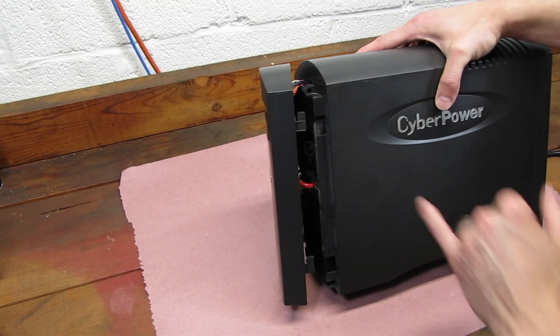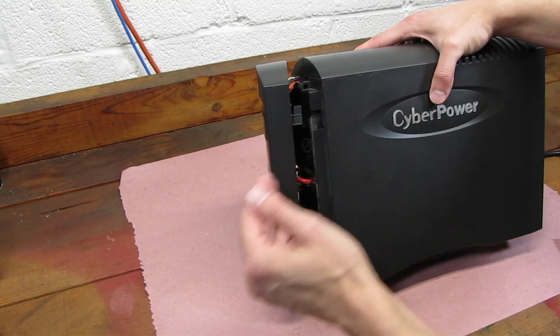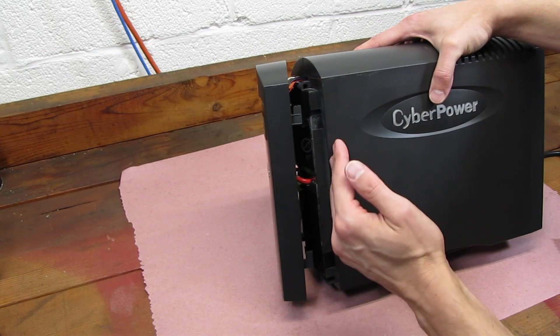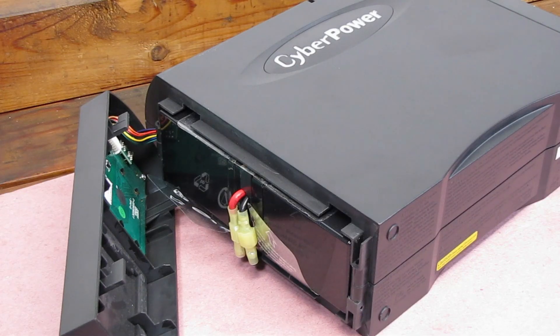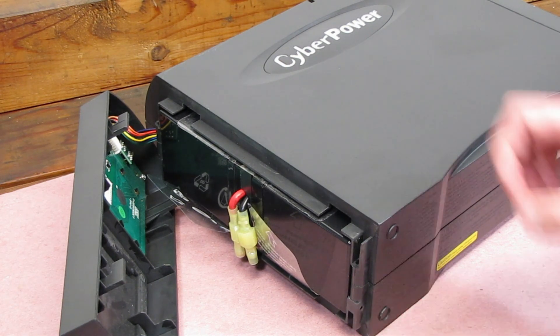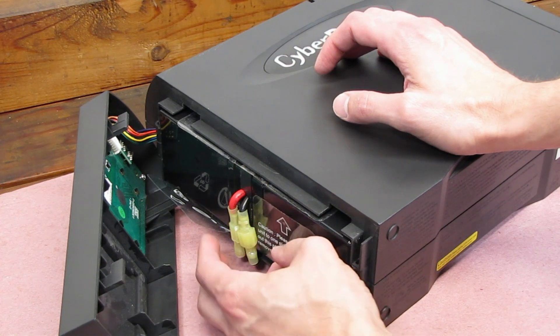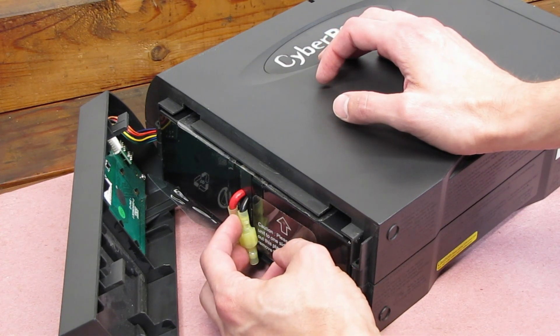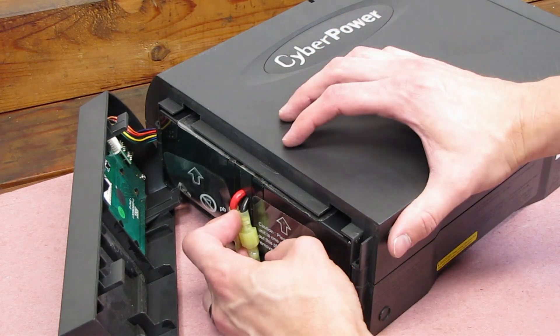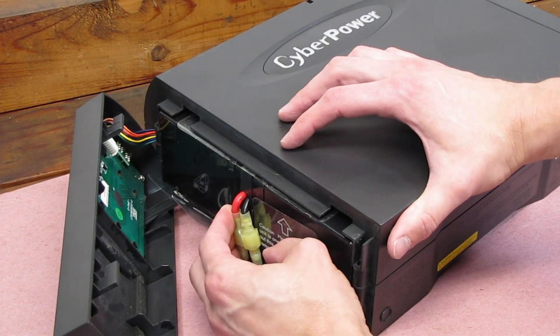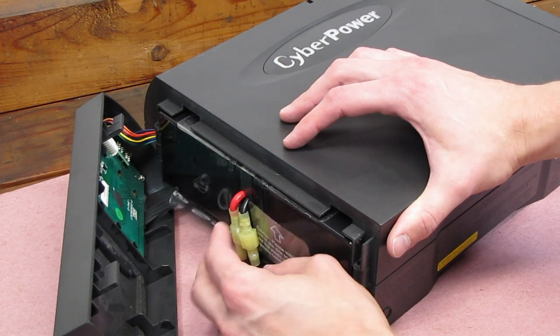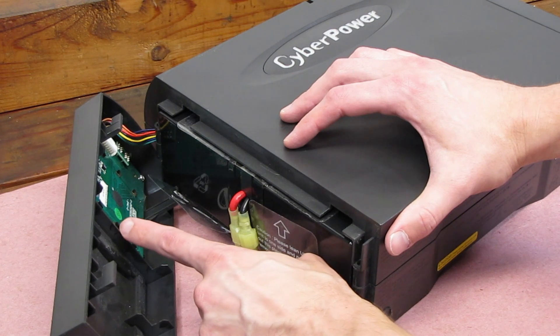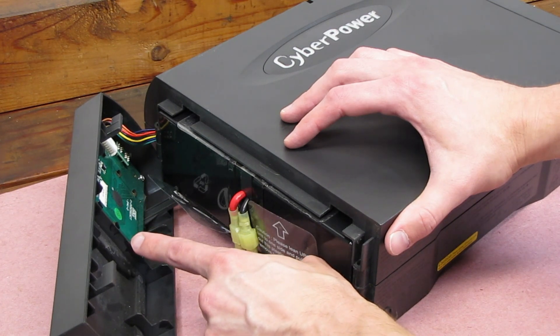To reinstall the front, align these hooks with the slots, push the panel in and slide it upwards. It's easier to do this if you lay it on its side. Pro tip, this UPS isn't very easy to put the front back on. So, to help the process, you want to take the two connections in the wires and pull them downwards towards the bottom of the UPS a little bit. This is going to get them out of the way of this plastic piece here when we go to reinstall it.